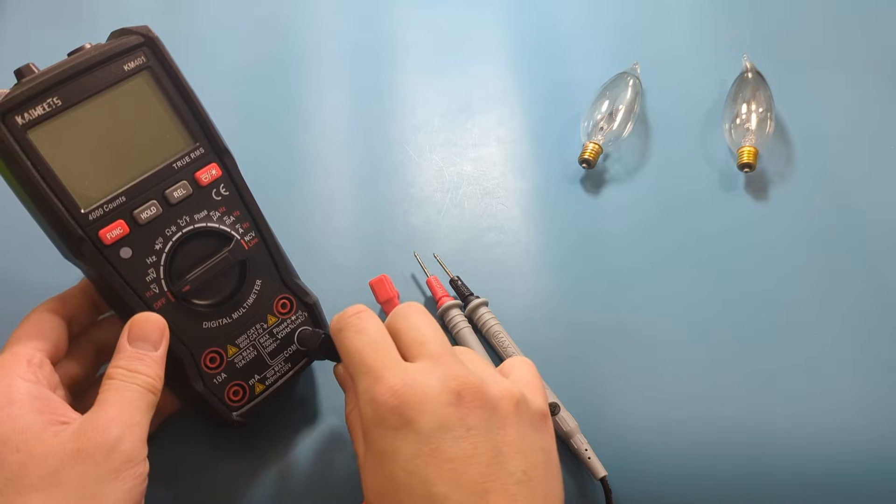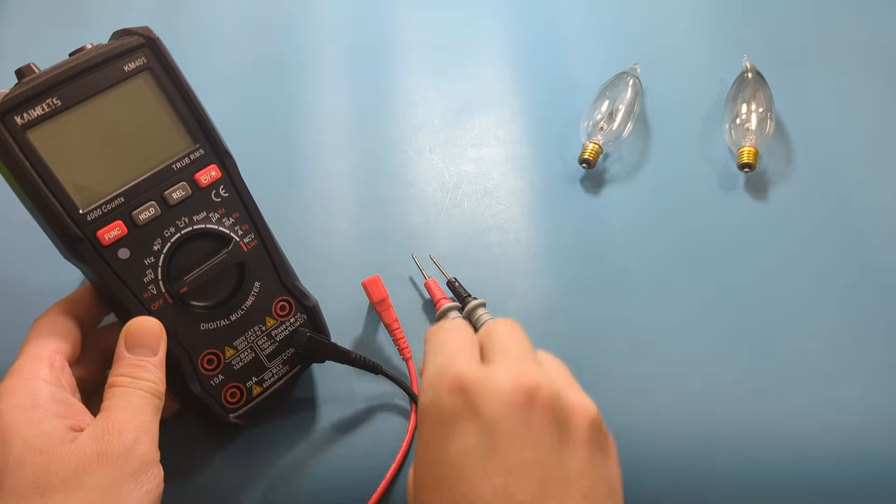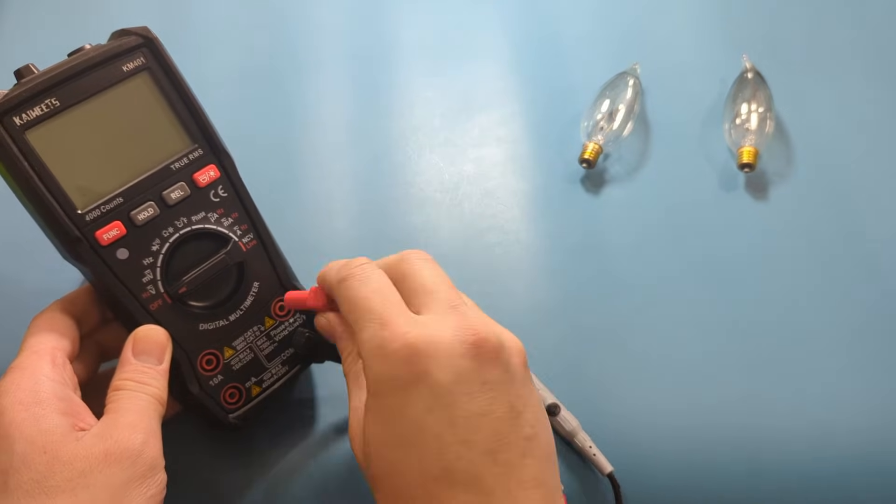On the multimeter, connect the black probe to the COM port. Connect the red probe to the voltage ohm port.